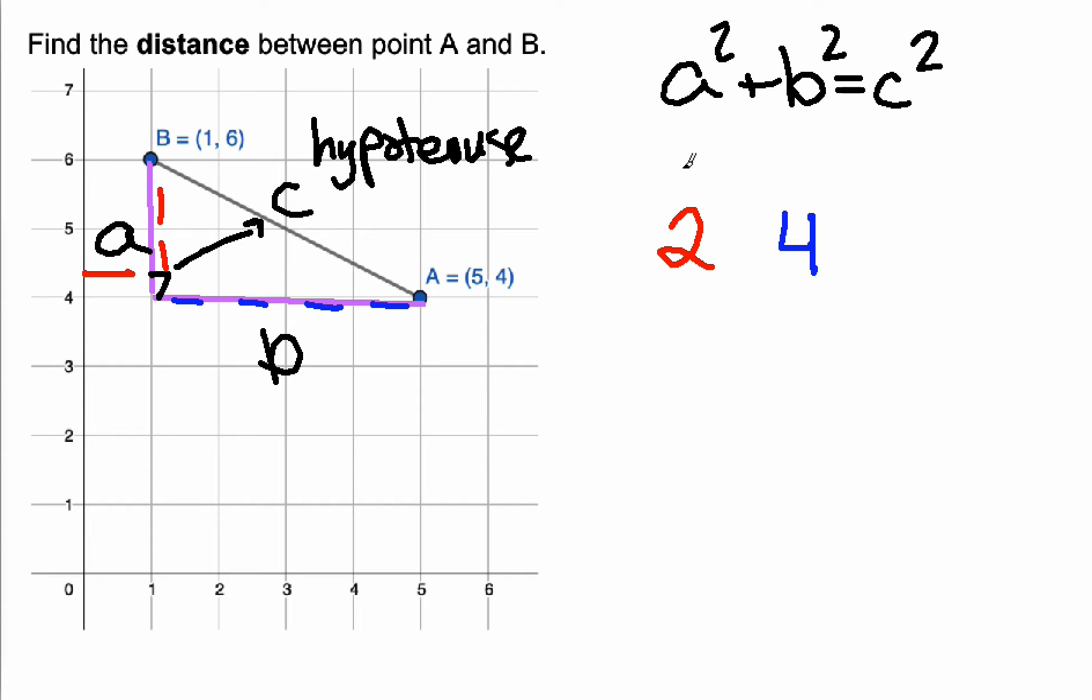So I'll rewrite my problem. 2 squared plus 4 squared equals C squared. 2 squared is 2 times 2, that's 4. 4 squared is 4 times 4 is 16, and that will equal C squared.